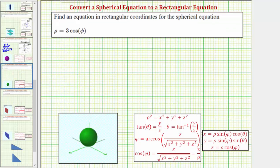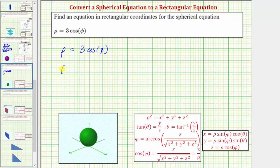Our next spherical equation is rho equals three cosine phi. Notice on the left side we just have rho, not rho squared. Let's perform a substitution for cosine phi. We can see that cosine phi equals z divided by rho. Performing this substitution, we have rho equals three times z divided by rho, or rho equals three z divided by rho.